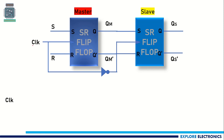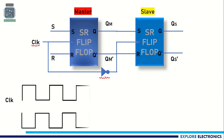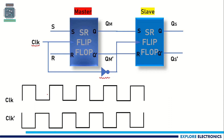For the master we have connected a clock. The second device, which is acting as a slave, will be connected with an inverted clock. So if you see the clock wave, this is the clock we are applying for the master, and this is the slave clock which is the inverted version of that.